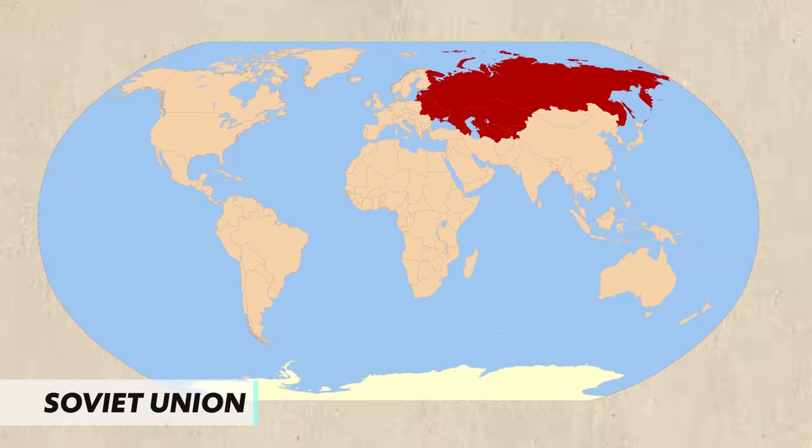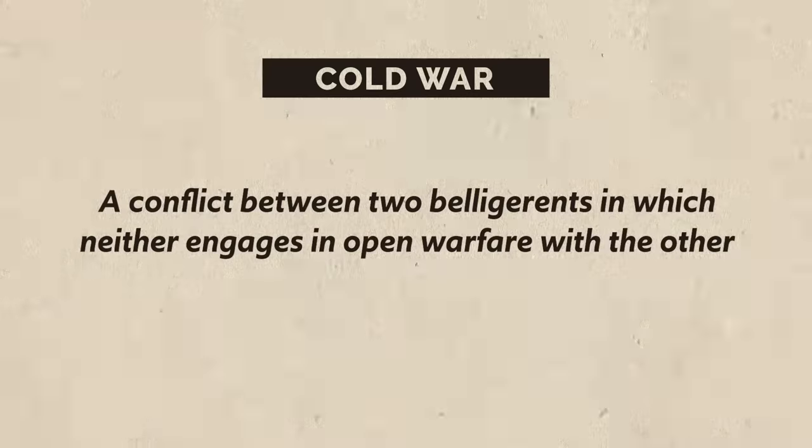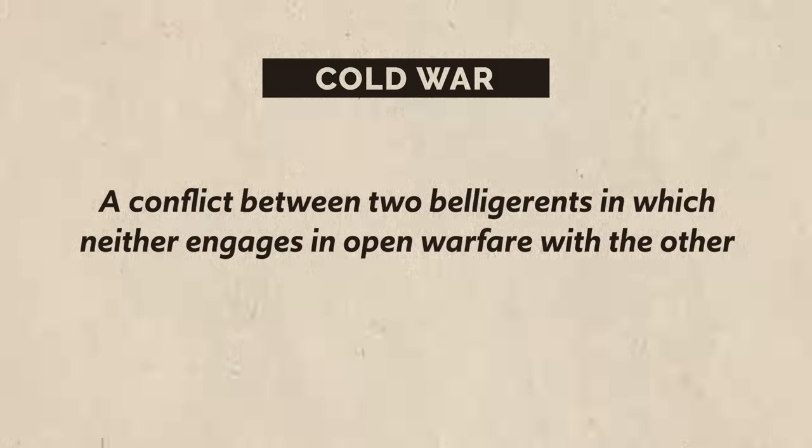We ended Unit 7 by talking about how the United States emerged from World War II as the most powerful nation on earth. But there was a group of folks who were not so happy about the ascendancy of the democratic United States, and those folks happened to live in the Soviet Union. The growing tension between the US and the Soviet Union made returning to normal life impossible, so instead what we got was the Cold War — a conflict between two belligerents in which neither engages in open warfare with the other. It's more of a battle of ideologies than a war with all the pew pew and the bang bang, but the tension was so thick it really could have erupted into actual fighting at any moment.